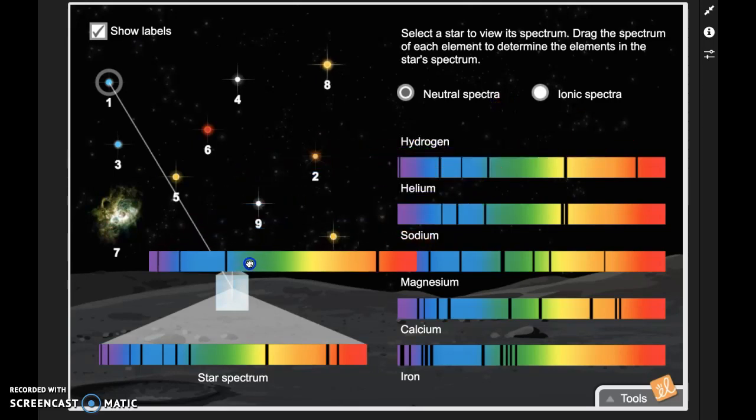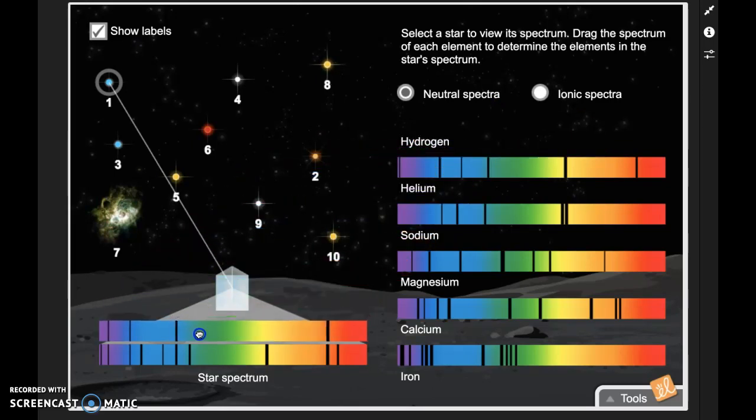And as I line that up here, I can see that these lines over here line up, these lines line up here, they line up here, and they line up here. This would tell me that star one is burning hydrogen as part of its fuel, okay? So I would include that within my elements that are included there.